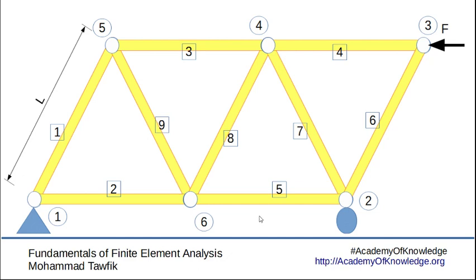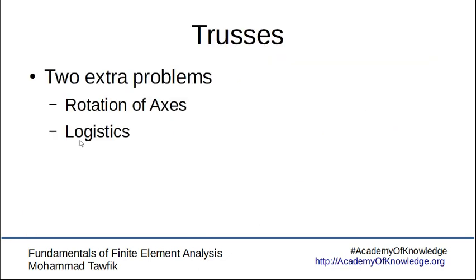Trusses have two fundamental problems that differentiate them from simple bars. The first is that we need a rotation of axes since the bars are not all aligned in the x-axis. Then there's the logistic problem in programming the finite element model of trusses. In this video we'll be talking about the rotation of axes.